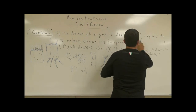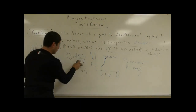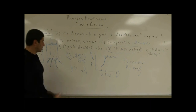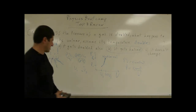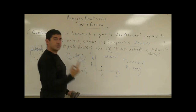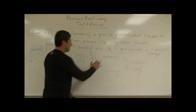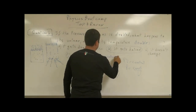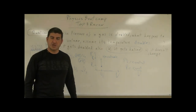Now consider the case where the temperature doubles along with the pressure doubling. If the pressure doubles and the temperature doubles, those two factors cancel in the gas law equation, and V2 equals V1 — the volume stays the same. On the PV diagram, the pressure simply goes up and doubles, while the volume stays constant. This is known as an isovolumetric process.